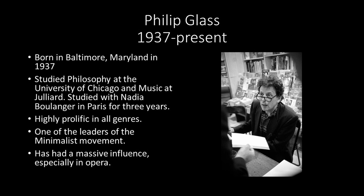Philip Glass was born in Baltimore, Maryland in 1937, where his father owned a record store and his mother was a school teacher. He studied philosophy at the University of Chicago, where he received a bachelor's degree in philosophy and mathematics. Afterwards, he applied for Juilliard, auditioning for performance in flute, which he more or less failed. However, one of the auditors suggested that he take composition lessons through their extension program, which he did.